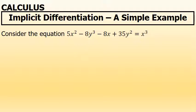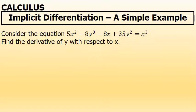In the equation 5x squared minus 8y to the third minus 8x plus 35y squared equals x to the third, I'm being asked to find the derivative of y with respect to x. This equation includes both x's and y's, but my final answer will be in the form y prime equals. Anytime I take the derivative of a y variable, I have to include a factor of the derivative of y with respect to x.